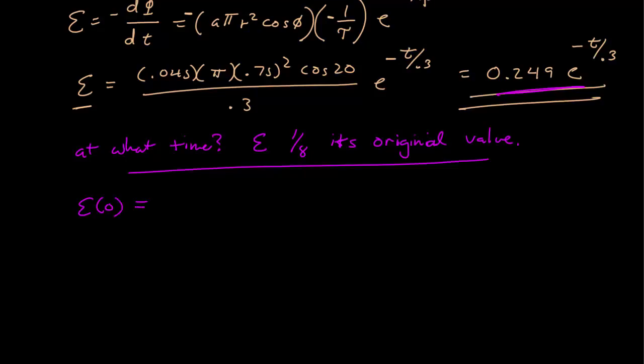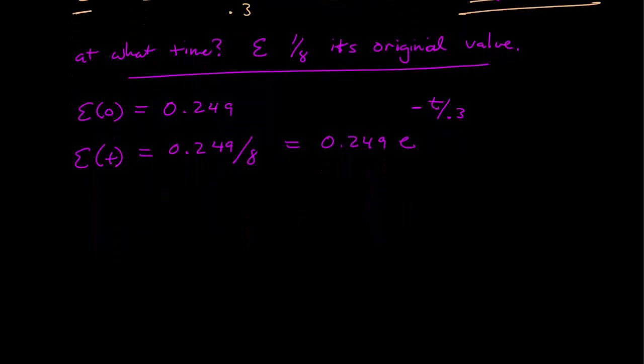So what I want to know is at what time is this EMF equal to 0.249, its original, divided by 8. So that's equal to 0.249 e to the minus T over 0.3. And now I just want to solve for T. This goes away, and so we have 1/8 equals e to the minus T over 0.3.